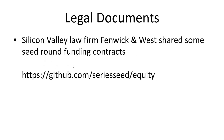Legal documents. One example is Silicon Valley law firm Fenwick & West — they shared some seed round funding contracts so that early stage startups can use their legal documents to get started. You can find those at github.com/seriesseed/equity. Other repositories on GitHub store different types of legal documents, and that's becoming more popular because it's easy to track edits, make changes, and merge changes.